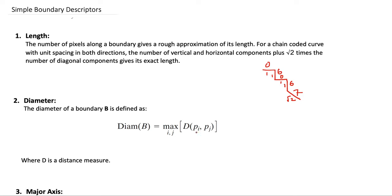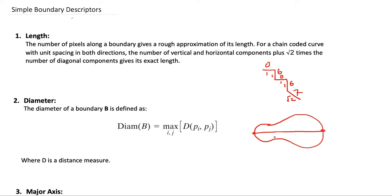The second descriptor is the diameter of a boundary. To calculate the diameter, you compute the distance between every pair of points along the boundary — denoted P_i and P_j — and take the maximum value. For example, given a boundary, you calculate distances between all pairs of points; the maximum distance corresponds to the two extreme points on the boundary, and that distance is called the diameter.